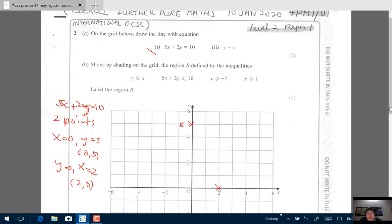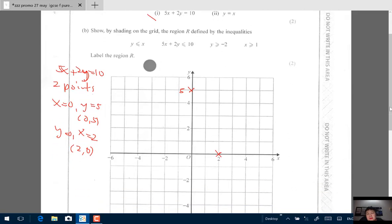I label and mark the point (2,0). So I have (0,5) and (2,0). So you will take the ruler and join, and this equation is 5x plus 2y equals 10. The other equation is y equals x.